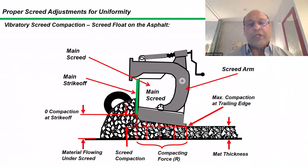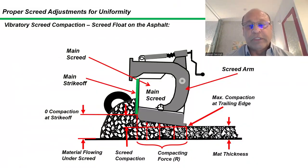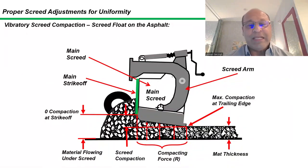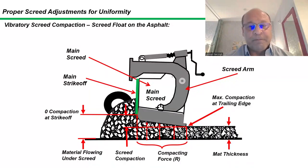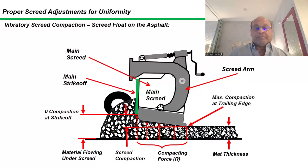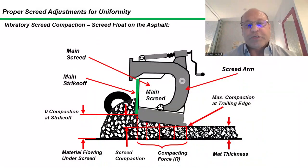Here we're looking at the main screed. If you look at the strike-off, in front of the strike-off we have zero compaction. The trailing edge should be the last thing touching your material. So from the trailing edge to the point of strike-off is our screed compaction. Now let's look at all three screed sections.